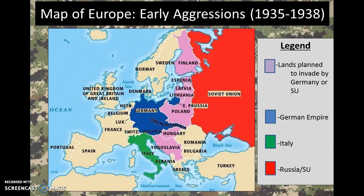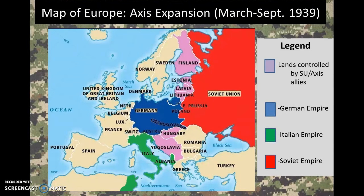Going back to the map, after Germany's early aggressions and then the Molotov-Ribbentrop Pact, we see Italy expanding down into North Africa and then Germany and the Soviet Union basically splitting Poland down the middle. That's all for this first video in our series on World War II looking at the rise of dictators and some of the early actions they took to gain power. I'll be back soon with another video — until then, this has been Professor Blazek signing off.